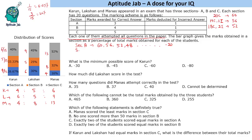For Section B, if a person attempts all 20 questions and gets all correct, the score is 80. With 19 correct and 1 incorrect: 76 minus 1 = 75. The difference here is 5 marks. So Section B scores go: 80, 75, 70, 65, and so on down to minus 20, since there is 1 negative mark for every incorrect attempt.